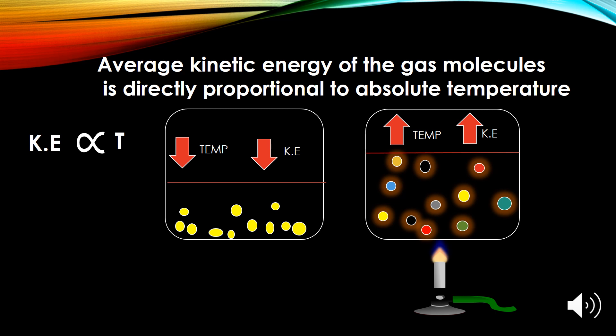And when we decrease the one variable the other variable definitely goes down. Now look at here in the first diagram as we decrease the temperature the kinetic energy of the molecules also decreases. And as a result you can see here that these gas molecules come close to one another.